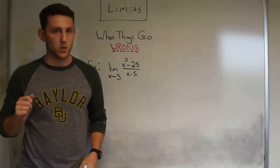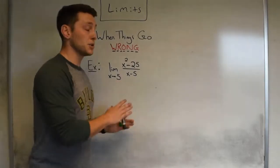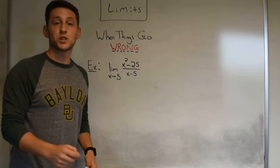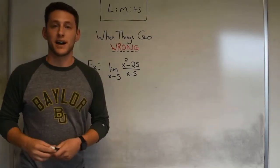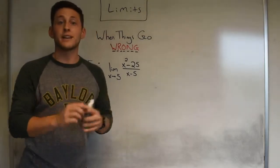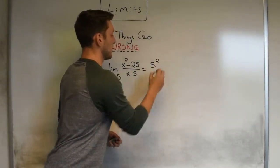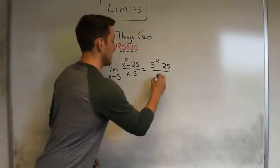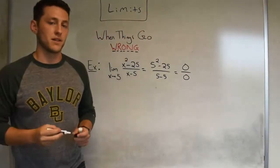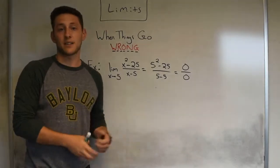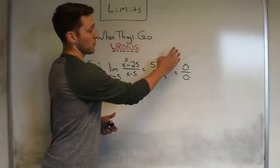Let's try another type of problem where things go wrong. This is brought on by another rational function: x squared minus 25 divided by x minus 5, and we're trying to calculate the limit as x approaches 5. Lean on the first rule: just plug the number in. We get 5 squared minus 25 divided by 5 minus 5, which becomes zero divided by zero.